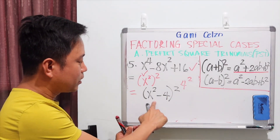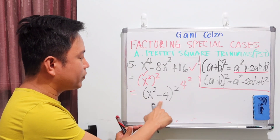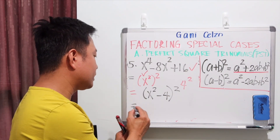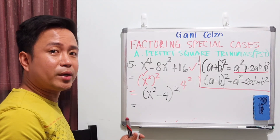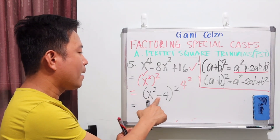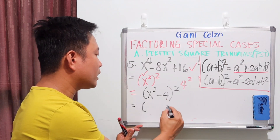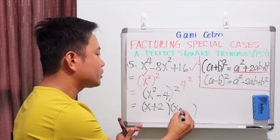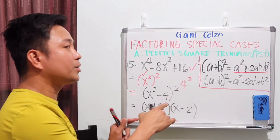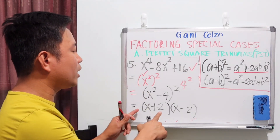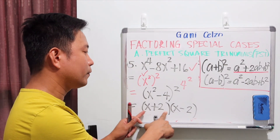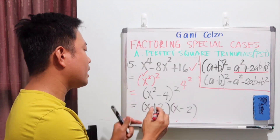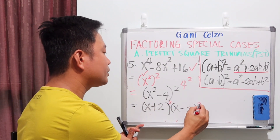Do you notice something with (x² - 4)? Can we still simplify that? Yes — we can still simplify it because this binomial is a difference of perfect squares: a perfect square minus a perfect square. So x² - 4 can be factored as (x + 2)(x - 2). And since they're squared, that means we will have two sets of (x + 2) and two sets of (x - 2).